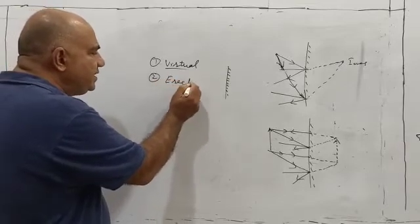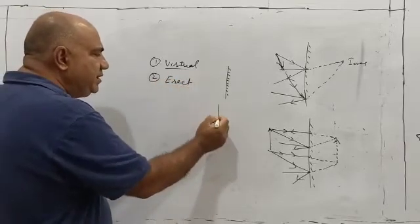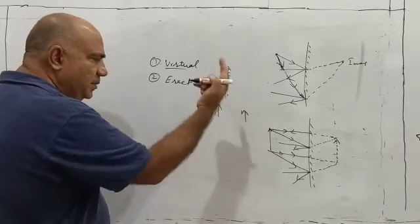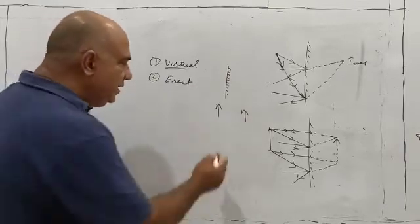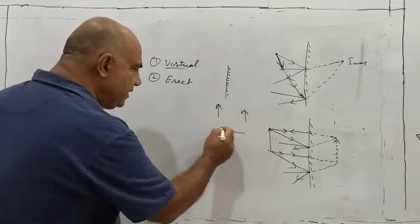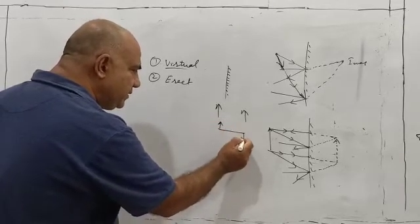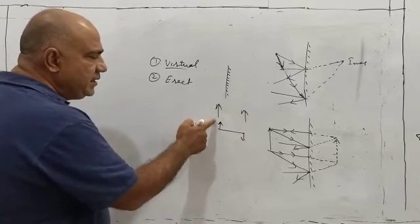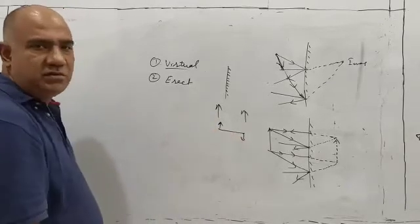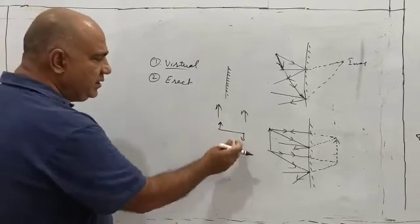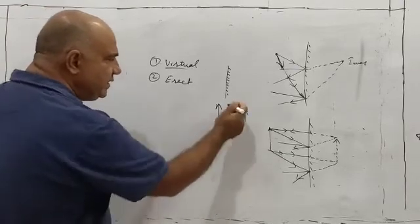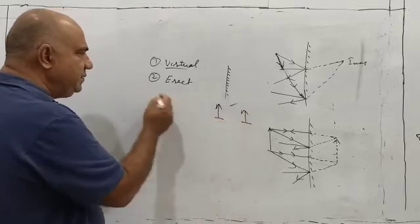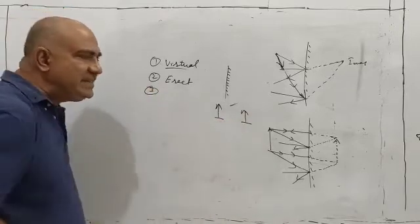If the image is virtual, it is undoubtedly erect as well. An erect image means a right-side-up or upright image. In contrast, an inverted image is one where the upside of the object appears down in the image. In an erect image, the object is kept upright and the image is also formed upright — this is the correct, erect image.